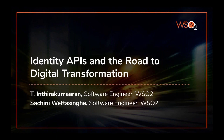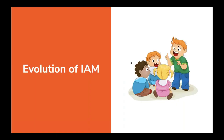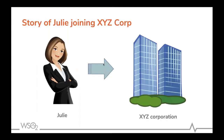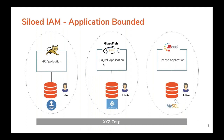In this webinar we are going to see how identity APIs have contributed to this kind of digital transformation. As a first part of this presentation, we will look at the evolution of IAM. Let's start with the story of Julie joining XYZ corporation. XYZ corporation had an initial deployment called application-bounded IAM, where each application maintained its own users. Julie had to go to each application like HR and register herself, then go to payroll and register there too.